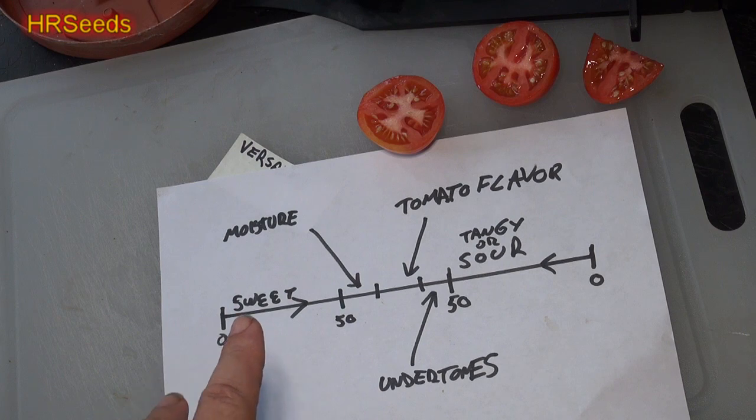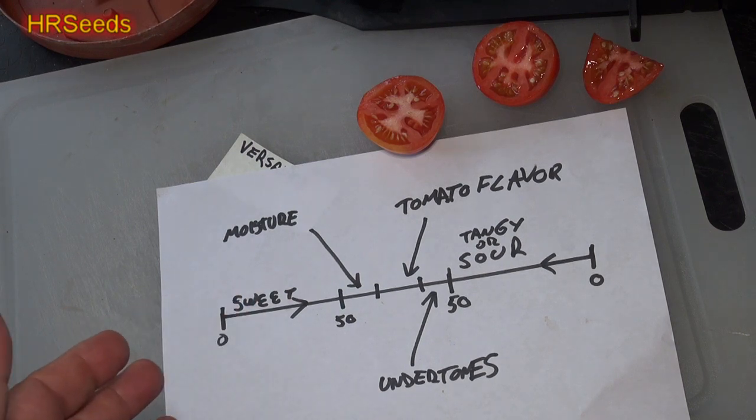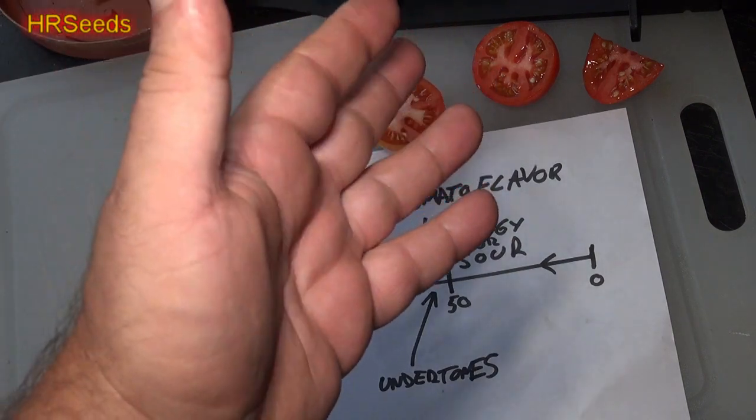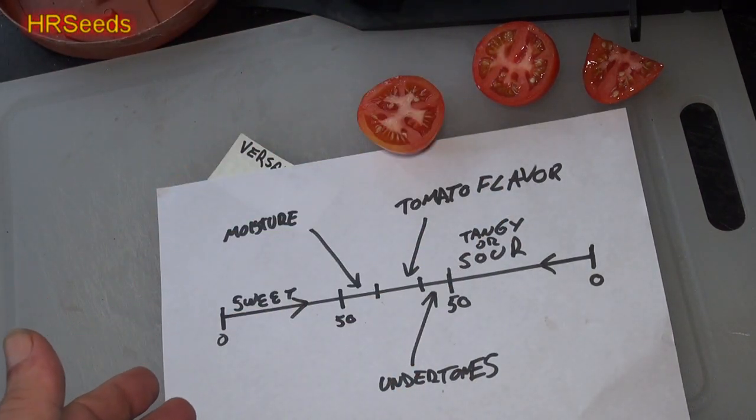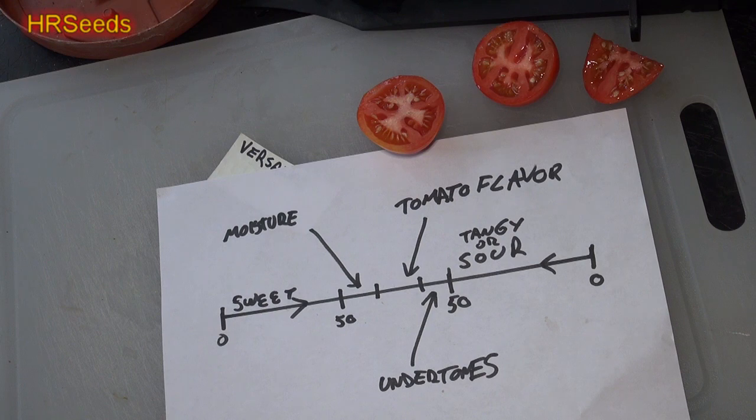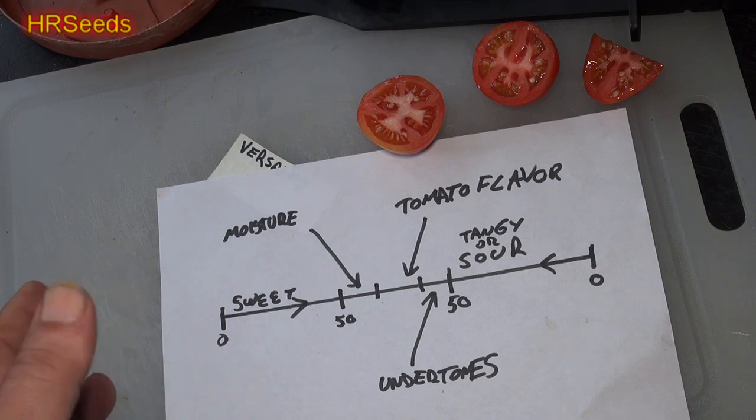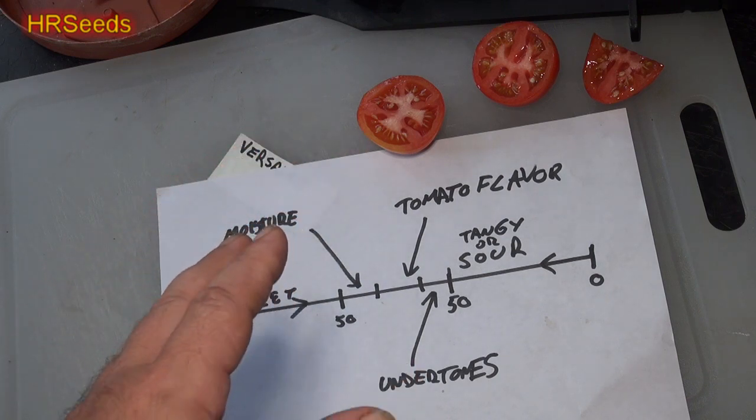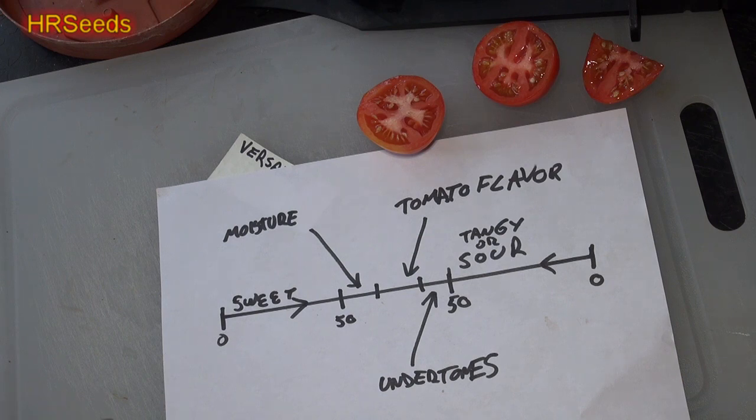Alright, so for sweetness it was really low. I would definitely say on a scale from one to fifty, fifty being super sweet and zero being no sweetness at all, I would put this somewhere around 16 to 20. Different parts of the tomato actually seemed a little bit sweeter than others, like the bottom and the top. So that's why I'm saying between 16 and 20, with 18 probably being right in the middle.